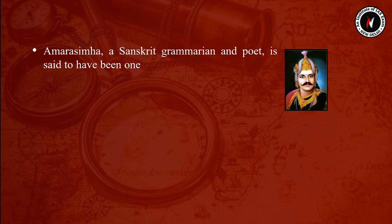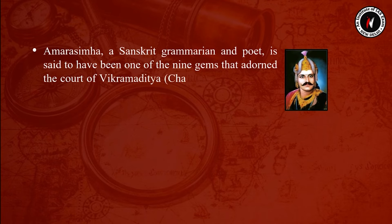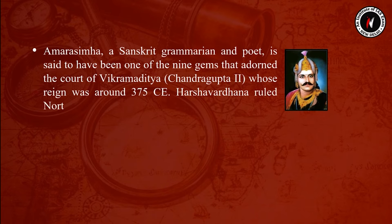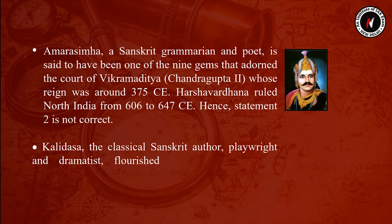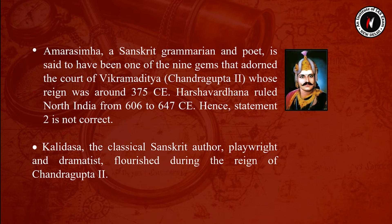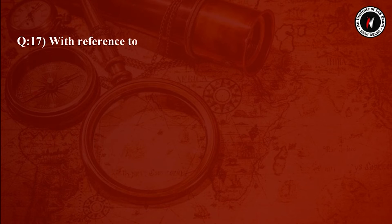Amar Sinha, a Sanskrit grammarian and poet, is said to have been one of the nine gems adorning the court of Vikramaditya, that is Chandragupta II, whose reign was around 375 CE. Harshavardhan ruled north India from 606 to 647 CE, so statement 2 is not correct. Kalidasa, the classical Sanskrit author and dramatist, flourished during the reign of Chandragupta II.